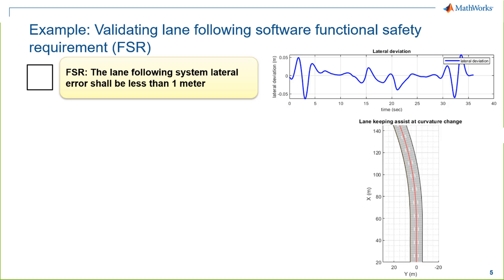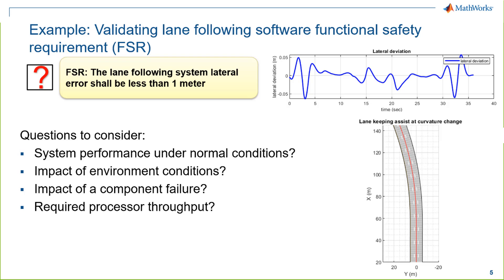Driver assistance systems are one of the reasons why we're seeing this increase in software complexity. Take, for example, a lane-following system designed to keep the vehicle centered in the lane. Of the many functional requirements, the one selected for our discussion today states that the lateral error of the system shall be less than one meter — meaning the vehicle should be within one meter of the target position within the lane. This requirement has many downstream impacts on the overall system and poses a few immediate questions.